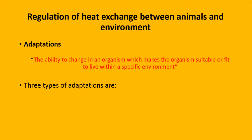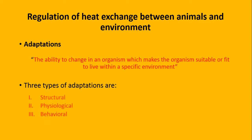سب سے پہلے adaptations کی definition کی بات کریں تو یہ وہ ability ہے to change in an organism which makes the organism suitable and fit to live within a specific environment. کسی بھی environment کے لئے body میں جو change آئے گا that is known as adaptation. اب 3 types of adaptations جو ہے وہ mammals کے اندر specifically دیکھی گئی ہیں: structural basis پر، physiological basis پر اور behavioral basis پر۔